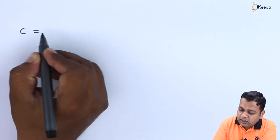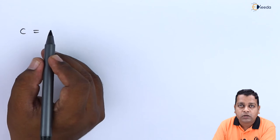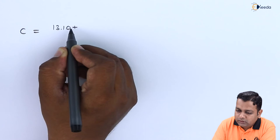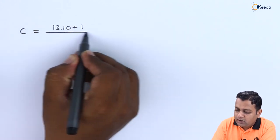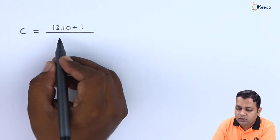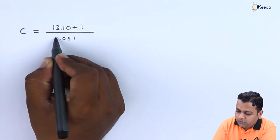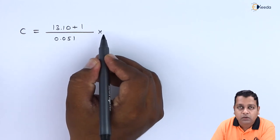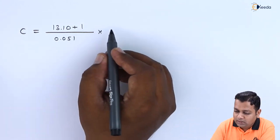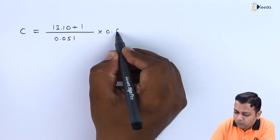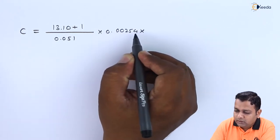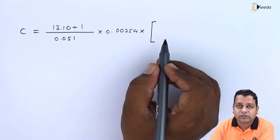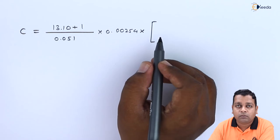The capacitance C is equal to we put the relative dielectric constant value that it is 13.10 this is to be added to the 1 and divided by the width w which is equal to 0.051. We let the value into the centimeters only. We get it multiplied with the length L here that it is 0.00254. This is in multiplication to the square bracket. The square bracket involves N minus 3 here. N is the number of fingers.